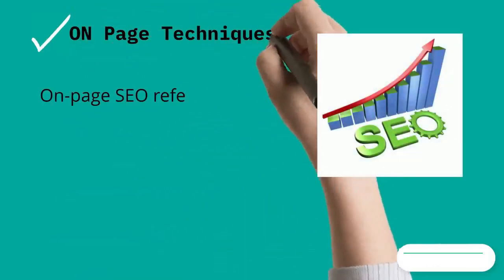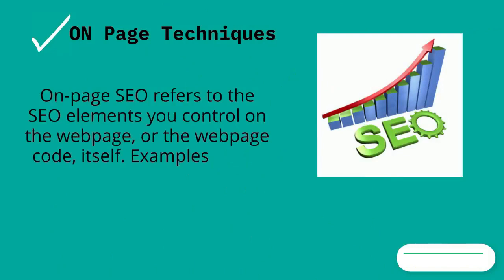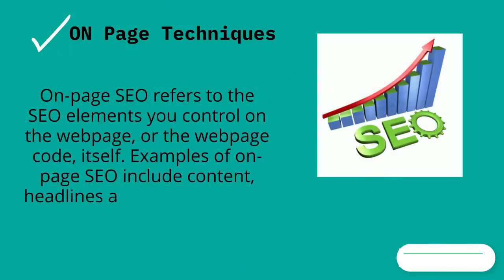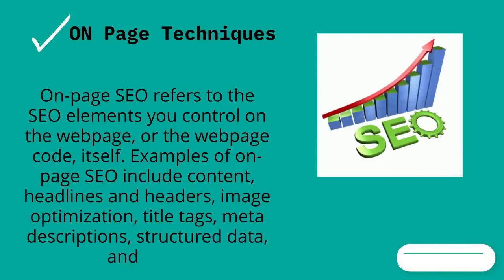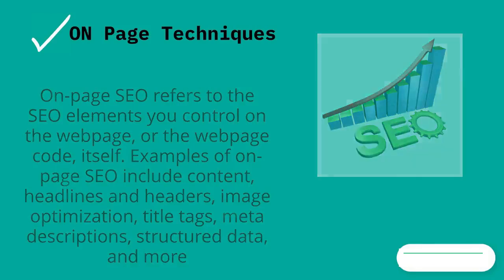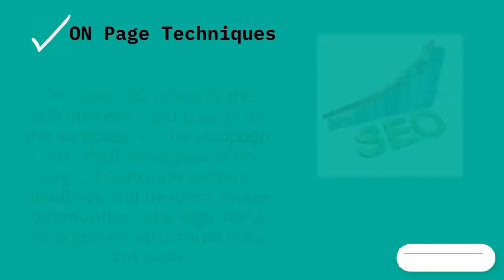What are on-page SEO techniques? On-page SEO refers to the SEO elements you control on the web page or the web page code itself. Examples of on-page SEO include content, headlines and headers, image optimization, title tags, meta descriptions, structured data, and more.